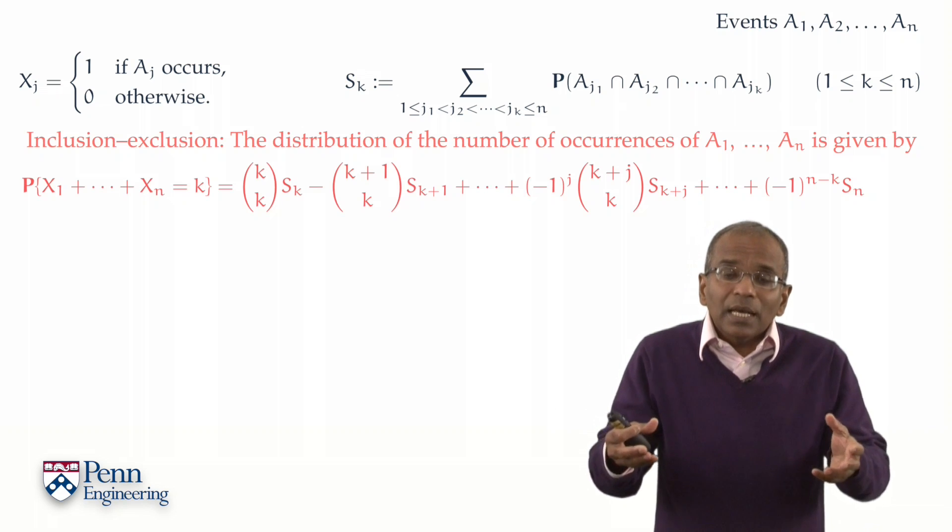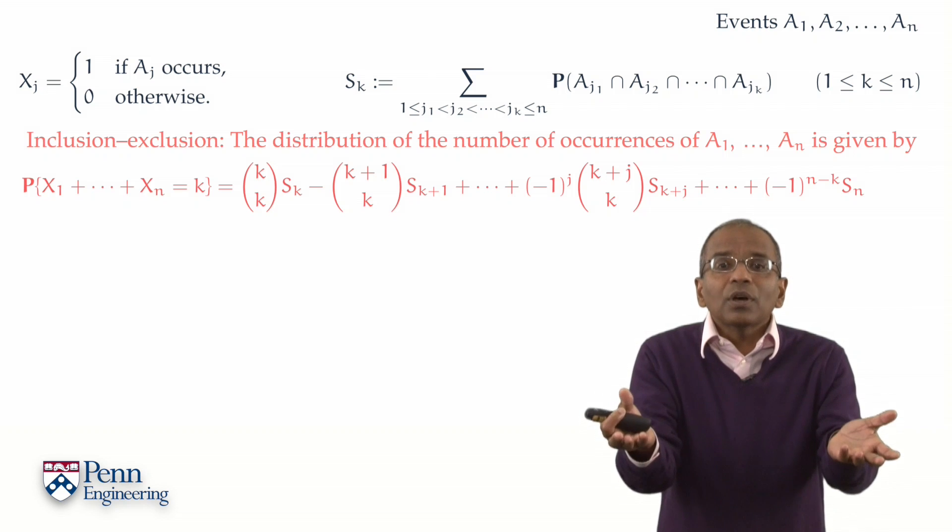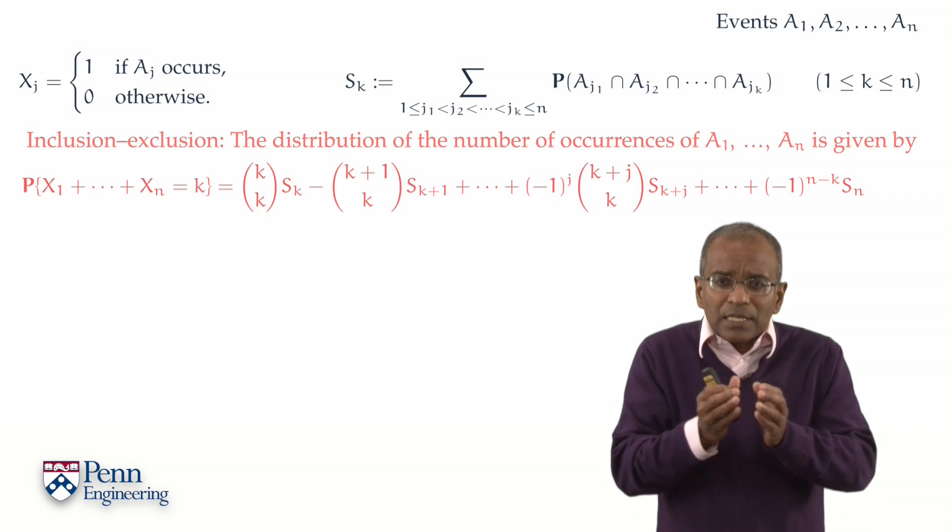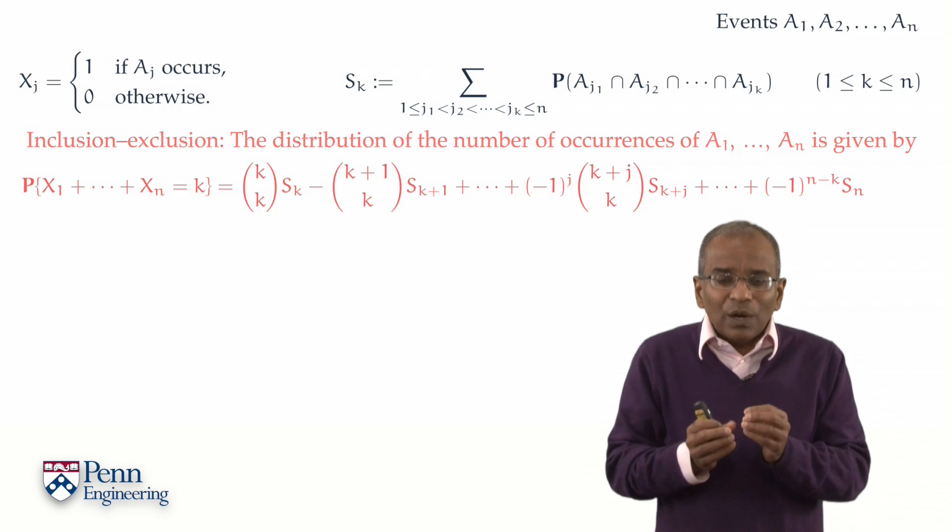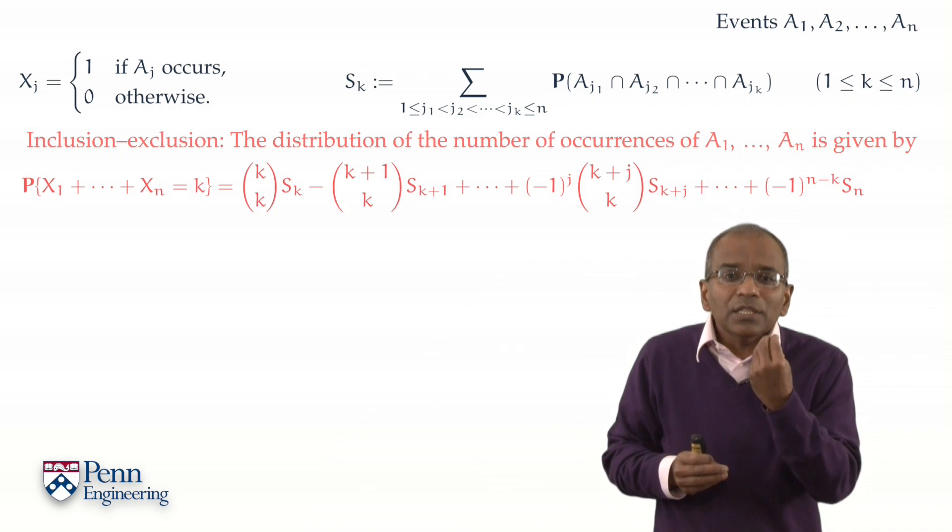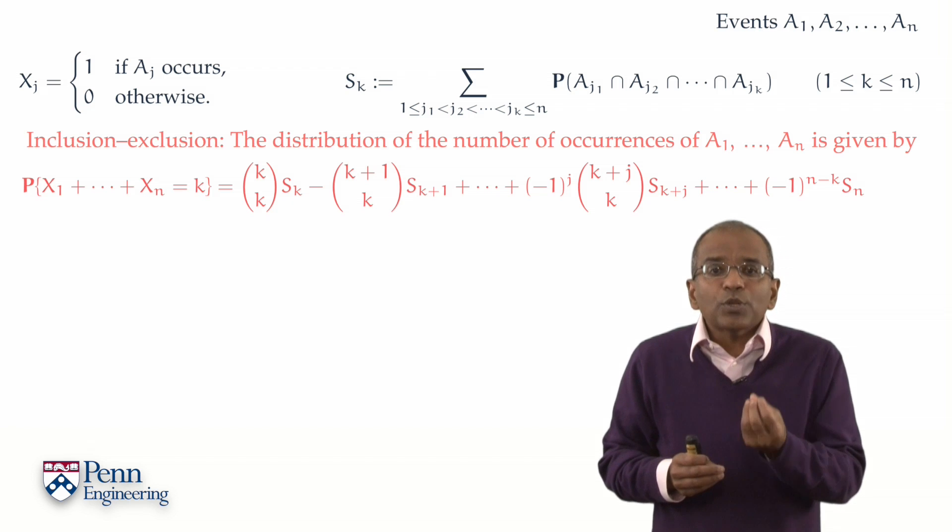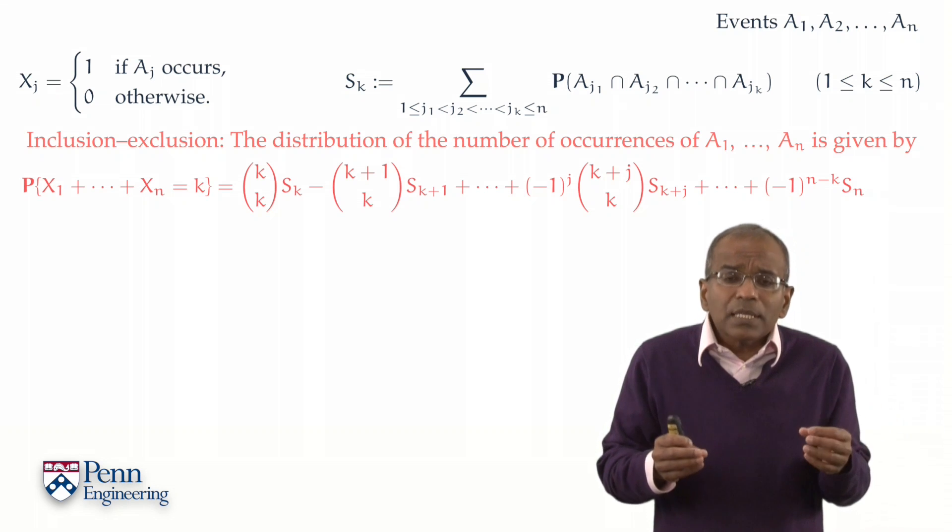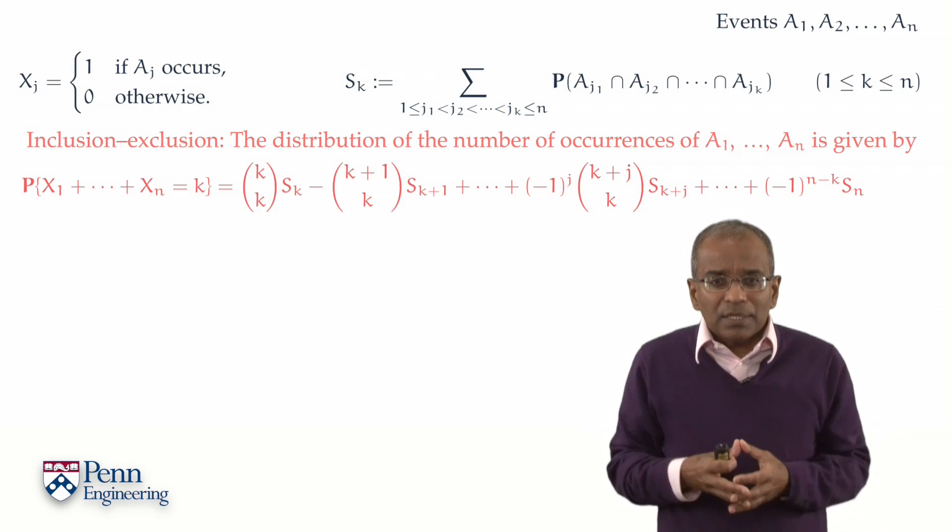And if we can do that, then we can compute the distribution of the number of occurrences. Okay, so here, for the first time in our entire sequence of lectures, we are hitting upon a theoretical principle which will allow us to move beyond independence, albeit in a modest way, towards mild dependence.